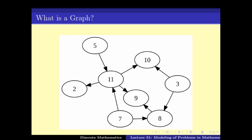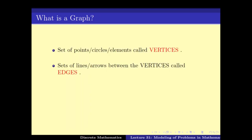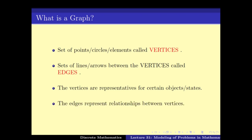To quickly revise what a graph is - a graph is something like this. We have a set of vertices and a set of edges, which are basically arrows or lines between the vertices. The vertices represent certain objects or states, and the edges represent relationships between the vertices, specifically binary relations.